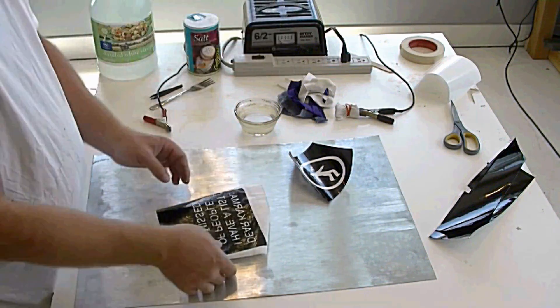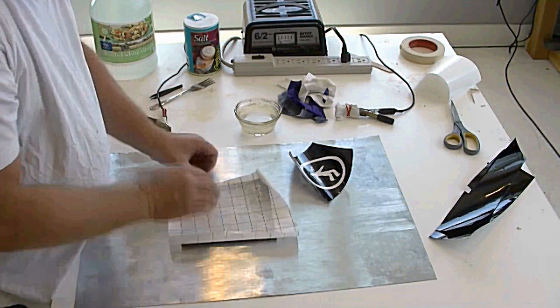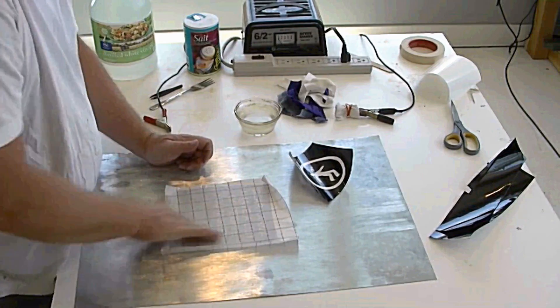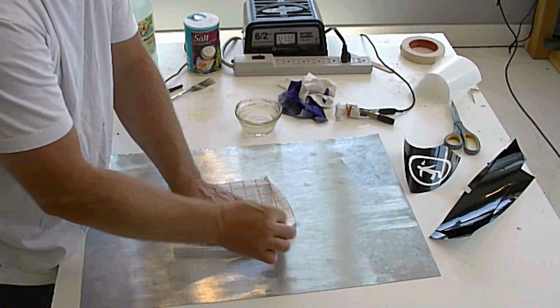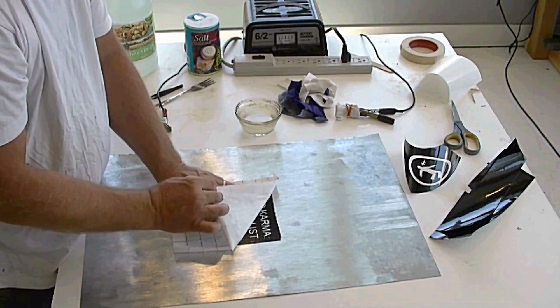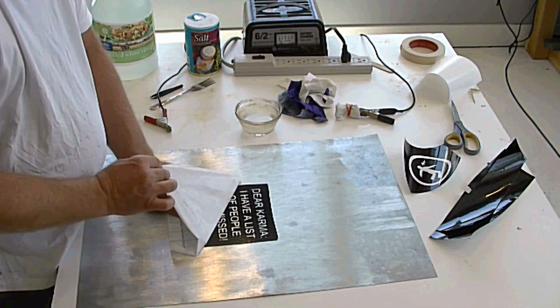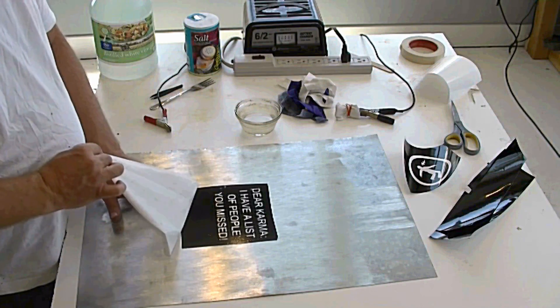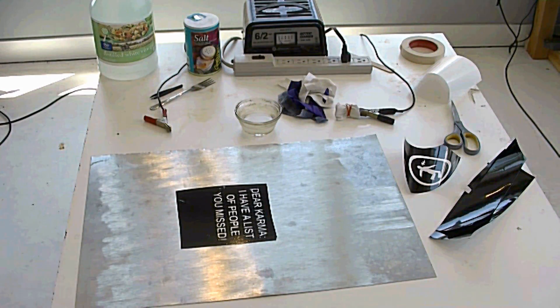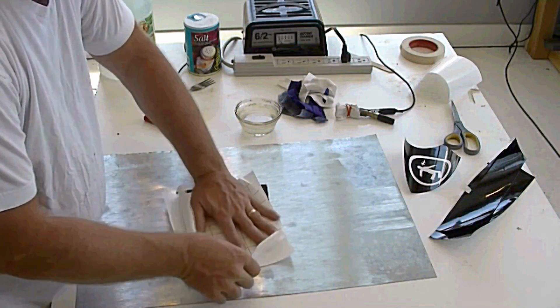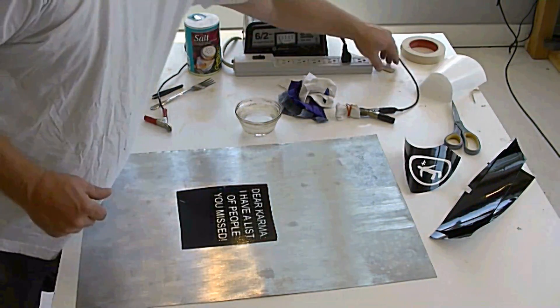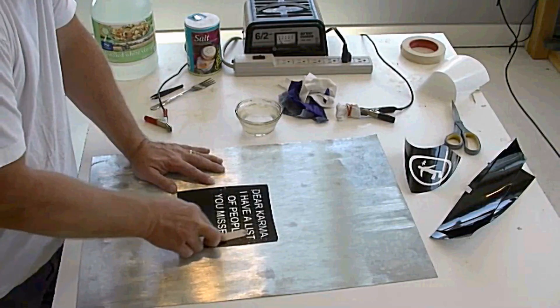Once you do that and everything's set, you can turn this over and now you're going to stick it where you want it on the metal. Just kind of use your hand to rub it down, rub the vinyl, get it stuck onto the metal there. Then you're going to pull this transfer paper off and it will leave the vinyl there with your graphic or wording. You can use this transfer paper probably five or six times before it really loses its stickiness, so I put it back on a backing and then put it to the side to use.